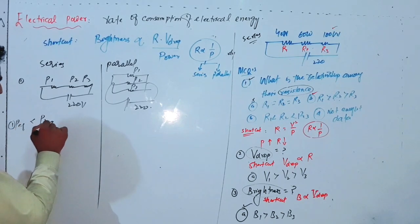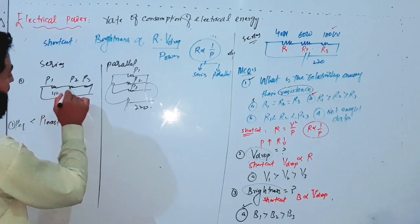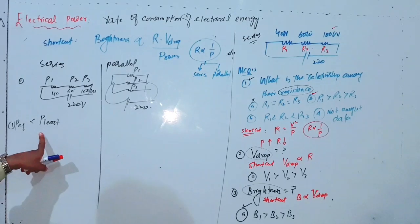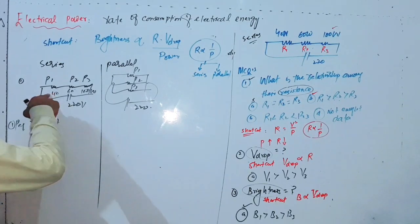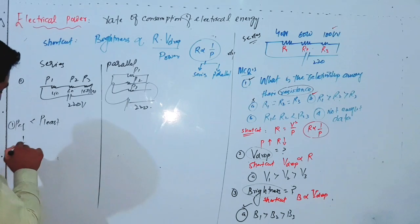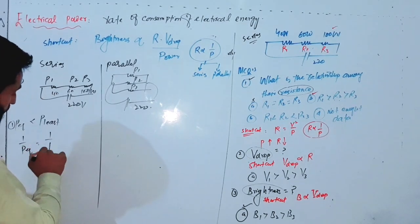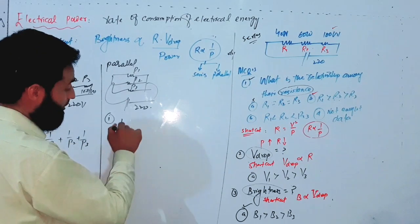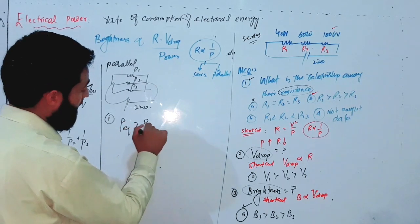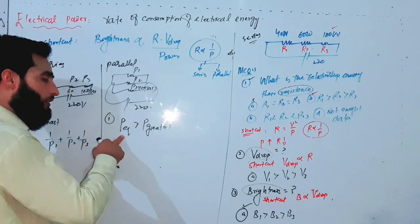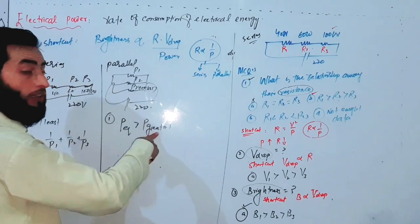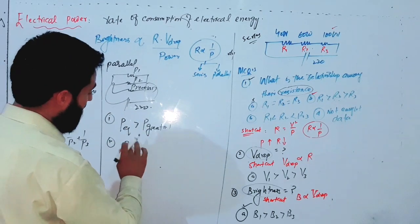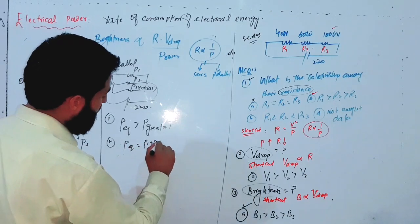In a series combination, the equivalent power will be less than the least one in the data (40W here). The formula is: 1/P_equivalent = 1/P1 + 1/P2 + 1/P3. In a parallel combination, the equivalent power will be greater than the greatest one in the data. The formula is: P_equivalent = P1 + P2 + P3.